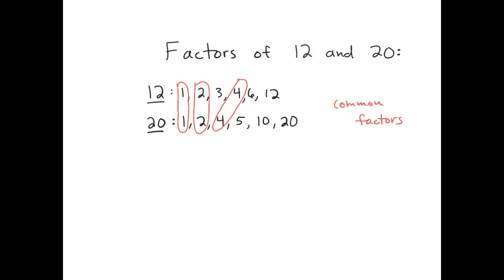Now we are interested in the greatest common factor. The greatest common factor is sometimes called the GCF, and in this case, the greatest common factor just means which of those common factors is the greatest. The largest of the common factors is the number 4, so we say the GCF is 4.